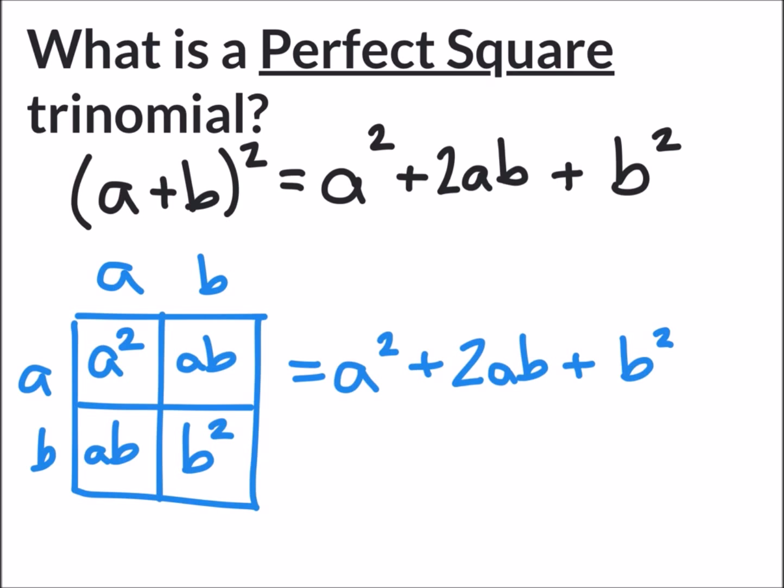Simplify our box to give us the polynomial a² + 2ab + b². So ultimately if you can write a polynomial in the form of (a+b)² that will be a perfect square.